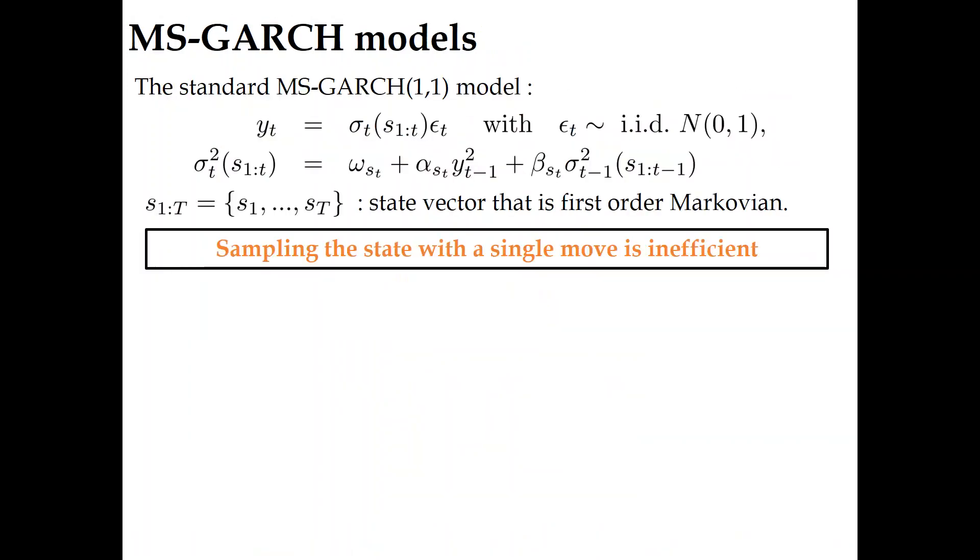To model the abrupt changes in the GARCH parameters, we introduce a latent state vector. This vector indicates the regime of the parameters at each time period. For instance, if st equals 1, it means that the parameters of the first regime should be used at time t. The path dependence issue arises from the fact that the conditional variance at time t depends on the states up to time t.